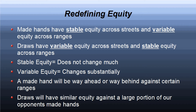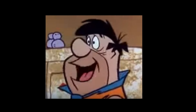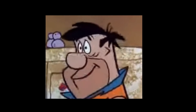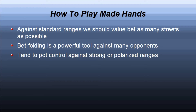Since made hands have stable equity as streets progress, we generally want to play straightforward and build pots when our opponent's range is weak. The standard play should be to go for as many streets of value as possible. With mid-strength made hands, bet-folding is our friend against most opponents — you bet for value and then fold if raised. This works best against weak opponents and ABC-type players. However, when our opponent's range for continuing is very narrow, we want to avoid building giant pots, unless SPR dictates otherwise.